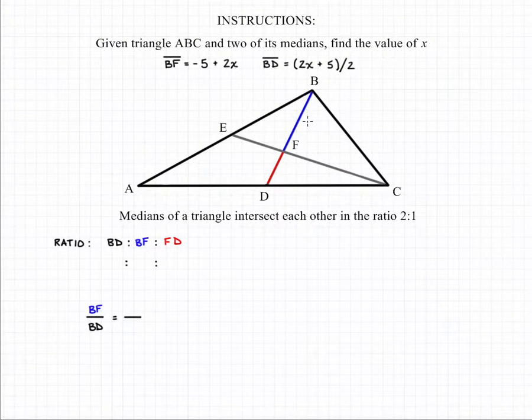To solve this problem, we need to remember that the medians of a triangle intersect each other in a ratio of 2 to 1, which means we can write the ratio of the whole line compared to those ratios as 3 to 2 to 1.